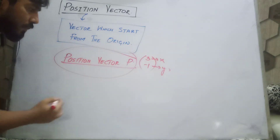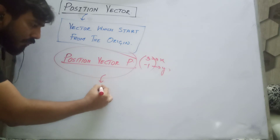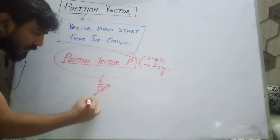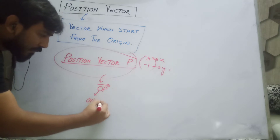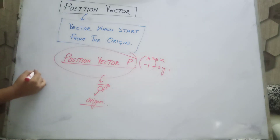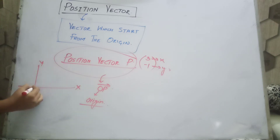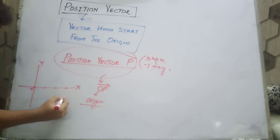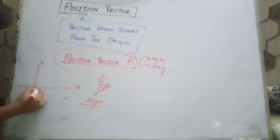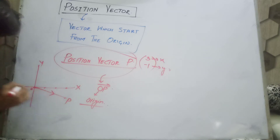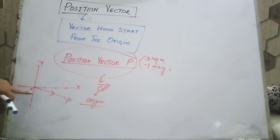Whenever we talk about the position vector, it means we are talking about the vector which starts from the origin, where O is the origin. For example, if we make it practical — this is the origin, where the x-axis and y-axis intersect. For point P at (3, -1): going to 3 on x and -1 on y gives us point P. That is vector OP, which starts from the origin — this is called the position vector.